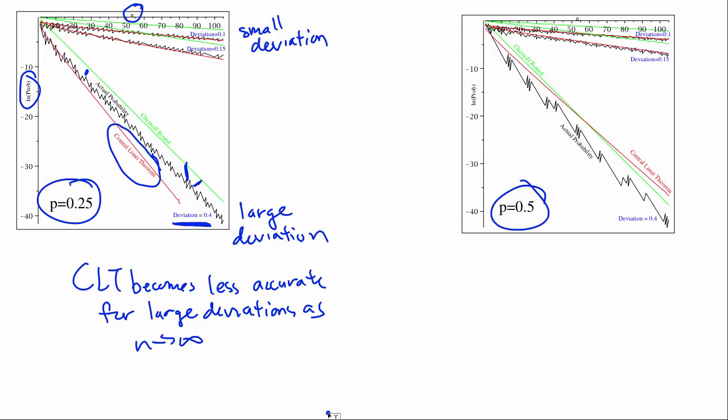So CLT becomes less accurate for large deviations as n goes to infinity. Meanwhile, the Chernoff bound is significant because it matches the slope of the actual probability. And you can see this in this example here. The slopes are pretty much the same, also up here where the slopes are pretty much the same, and here.